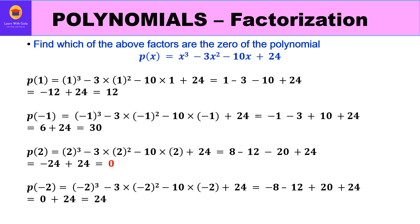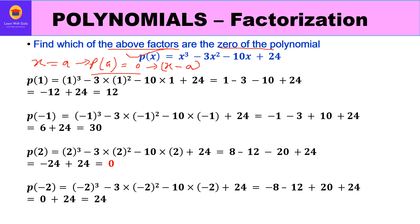After identifying the factors of 24, our next step is to find which of these factors are zeros of the given polynomial. We do that by replacing x by each factor, and if p(a) = 0, then by the factor theorem, x - a is a factor of the polynomial. We will now find which factor gives 0 by hit and trial, starting with x = 1.